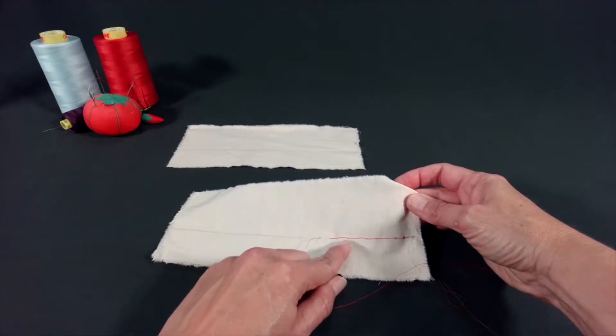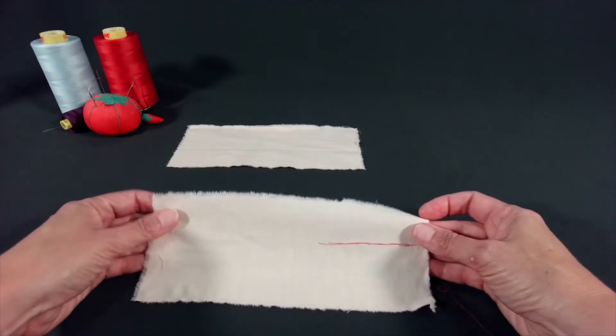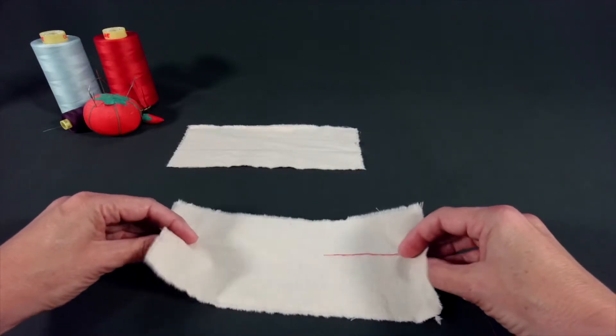On the face, the stitches will butt or kiss each other to form what looks like a continuous line. On the reverse or the back, the stitches will overlap.